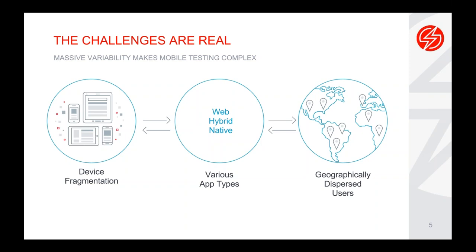Looking at device fragmentation: you have different types of devices with different operating systems — various Samsung Galaxy phones, LGs, all the different types of Android devices, as well as different iOS devices. There's so much fragmentation that it makes mobile testing very complex, especially for organizations that have inherited the testing activities for new mobile initiatives. Then you have the various app types: web, hybrid, and native apps — including responsive design and progressive design web applications.